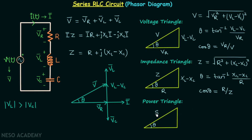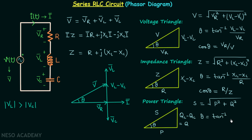In the power triangle, this side is the apparent power S, this side is QL minus QC which equals the net reactive power Q, and the base is the real power P. Apparent power S equals the square root of P² plus Q². The power factor angle θ equals tan inverse of Q divided by P, and the power factor equals real power divided by apparent power.